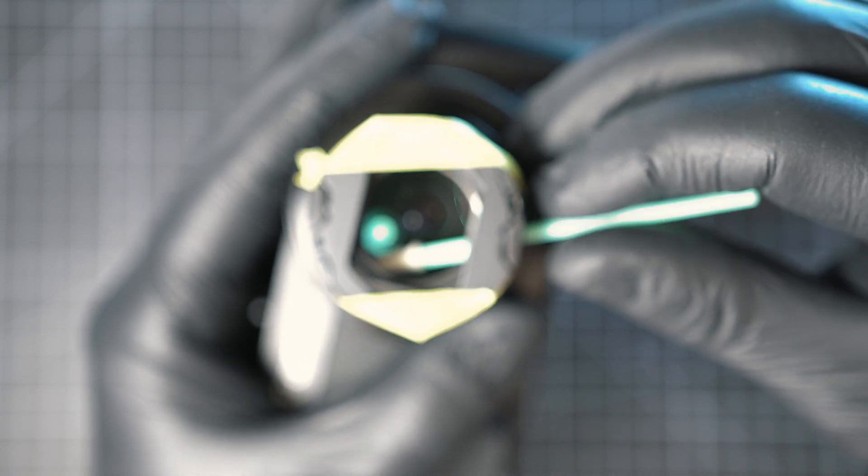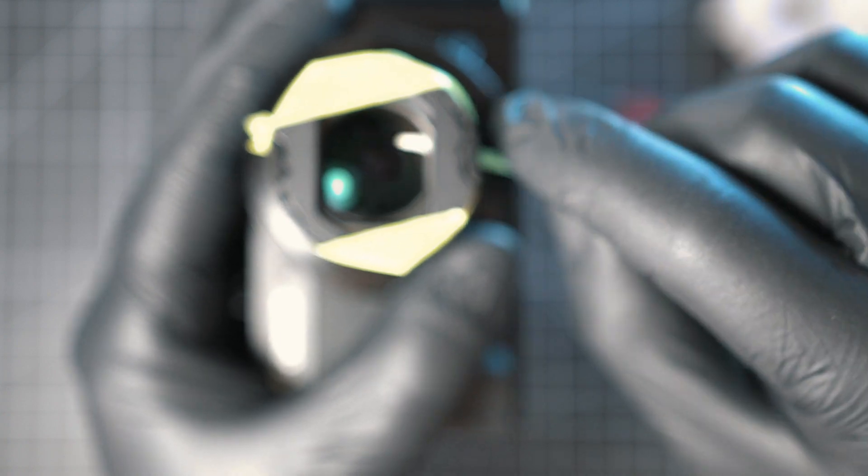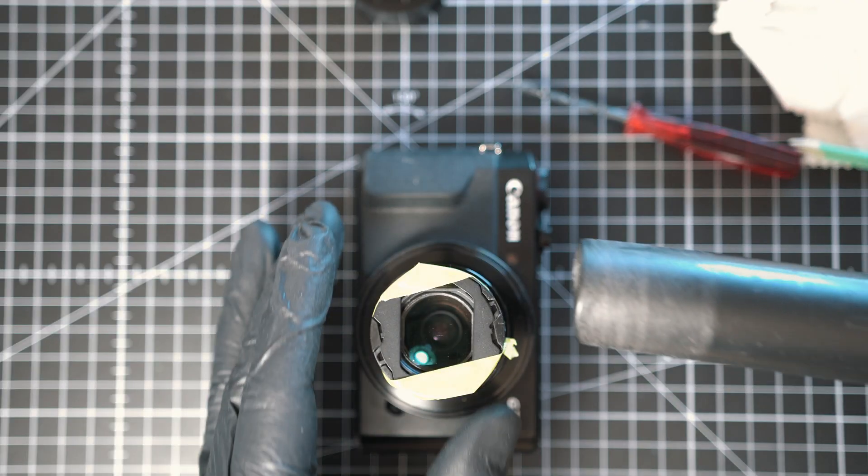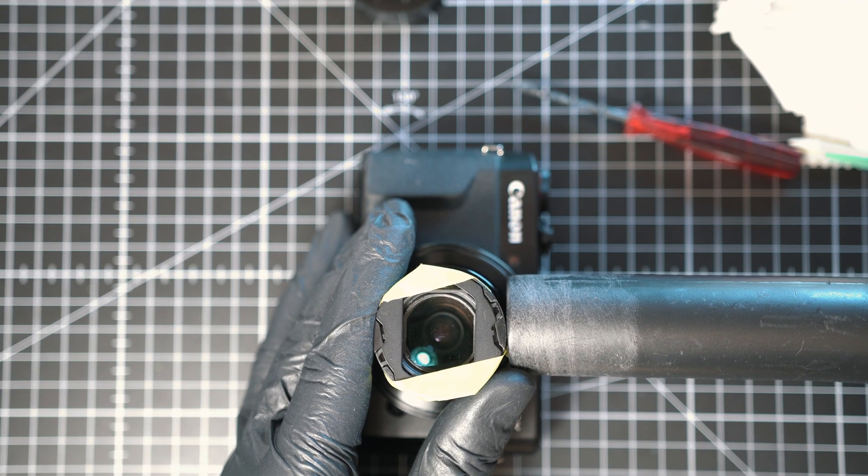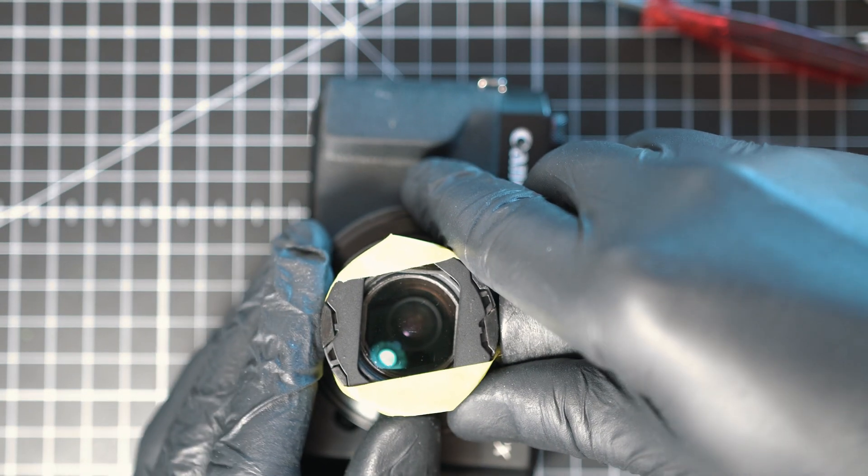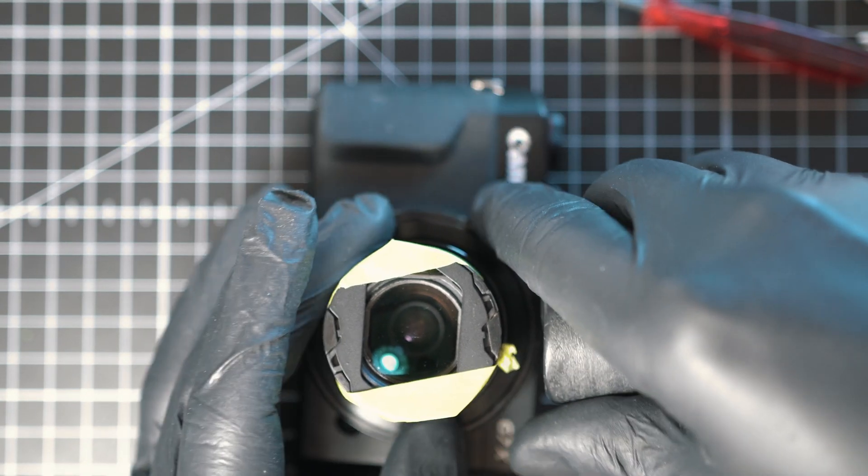To get all loose dust out, we can use vacuum cleaner. Simply put it on the hole and dust particles will be sucked out. Be careful not to suck lens blades.